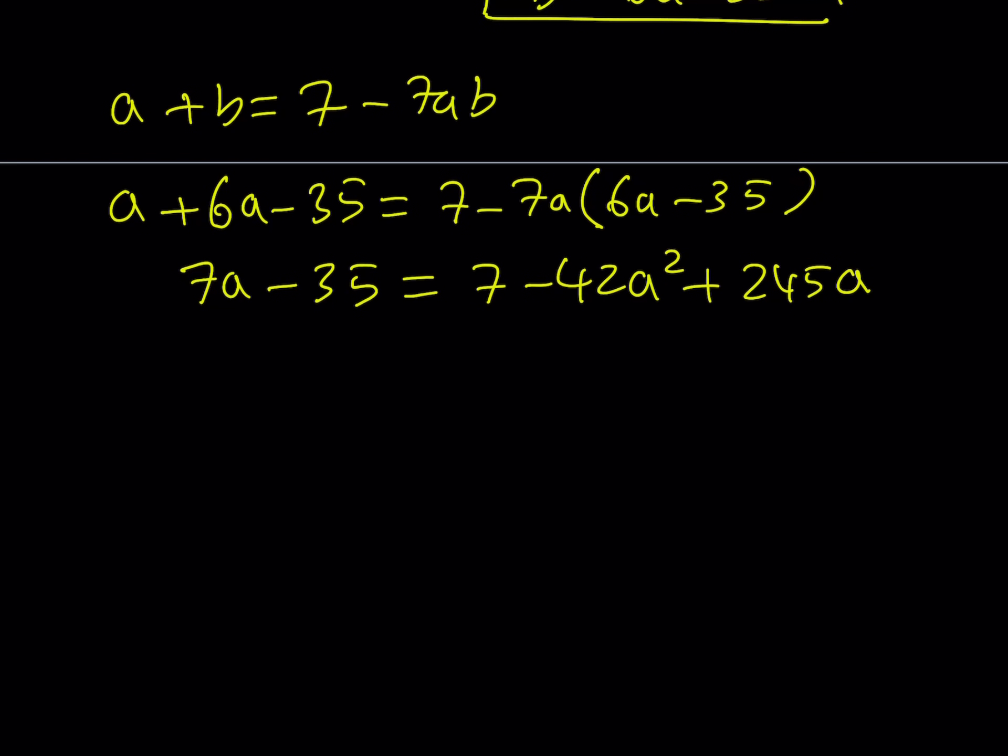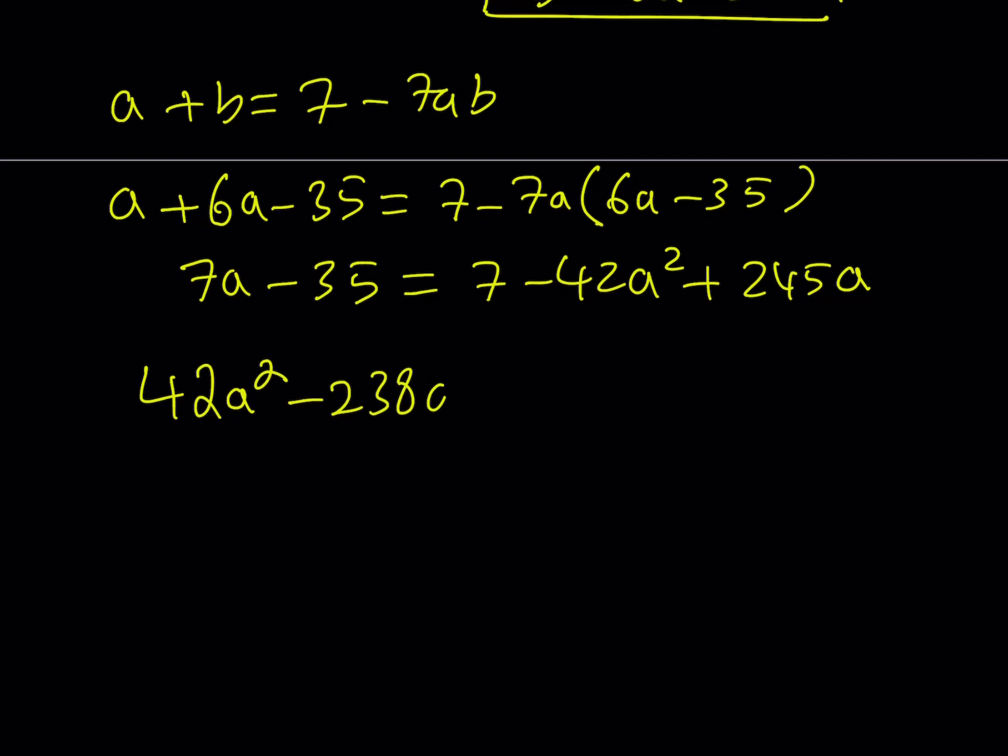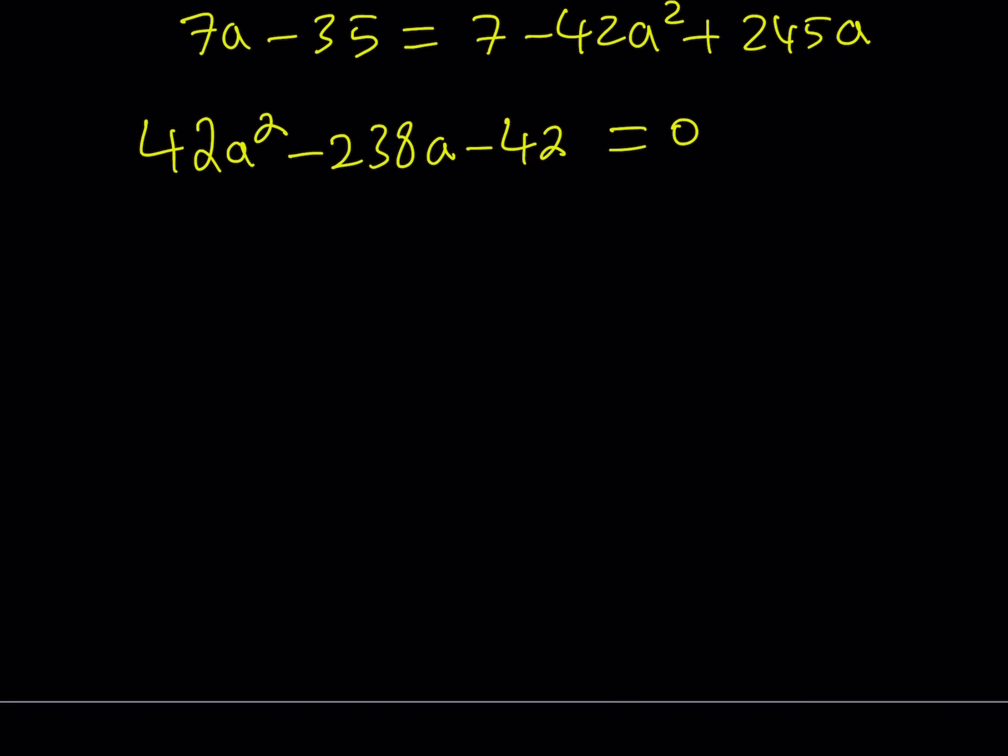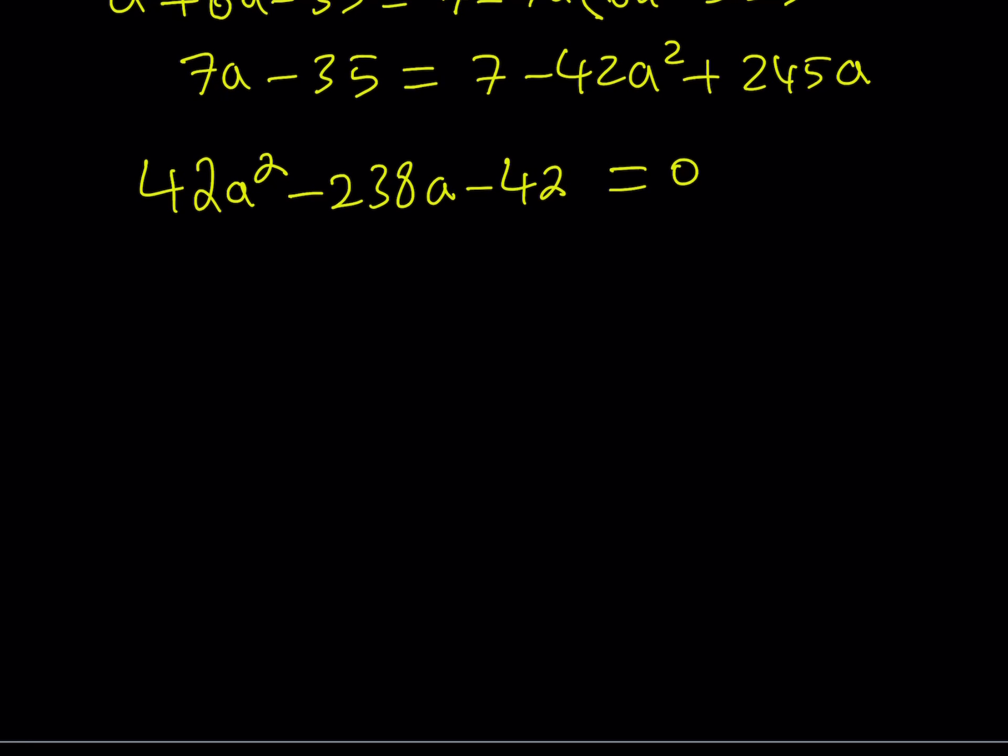Let's put everything on the same side and try to keep a squared positive. So on the left-hand side, 42a squared. We have 7 minus 245, which should be negative 238a, and then negative 35 minus 7 makes negative 42. Now I got my quadratic, but one thing that will help a great deal here is to simplify this equation.